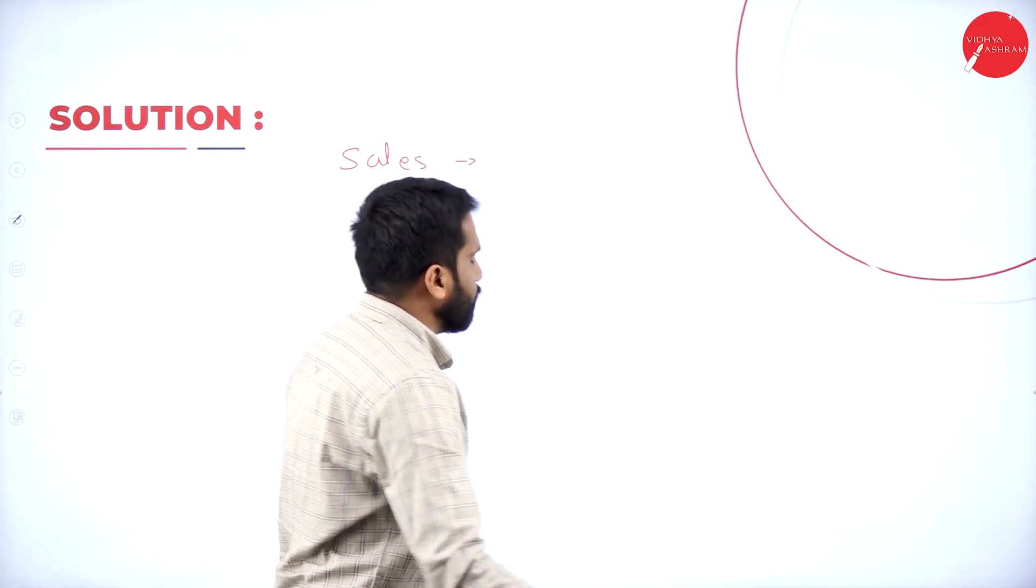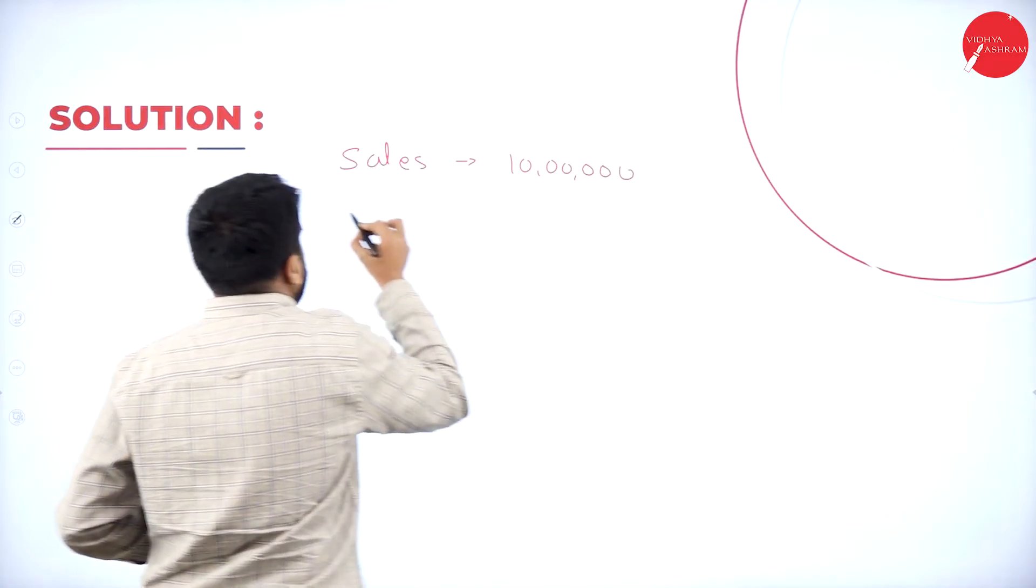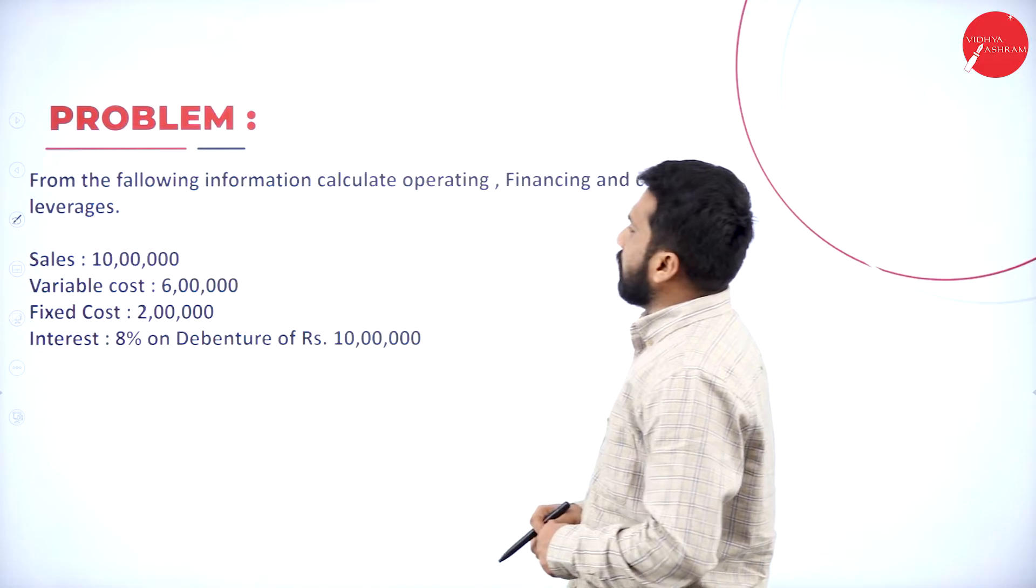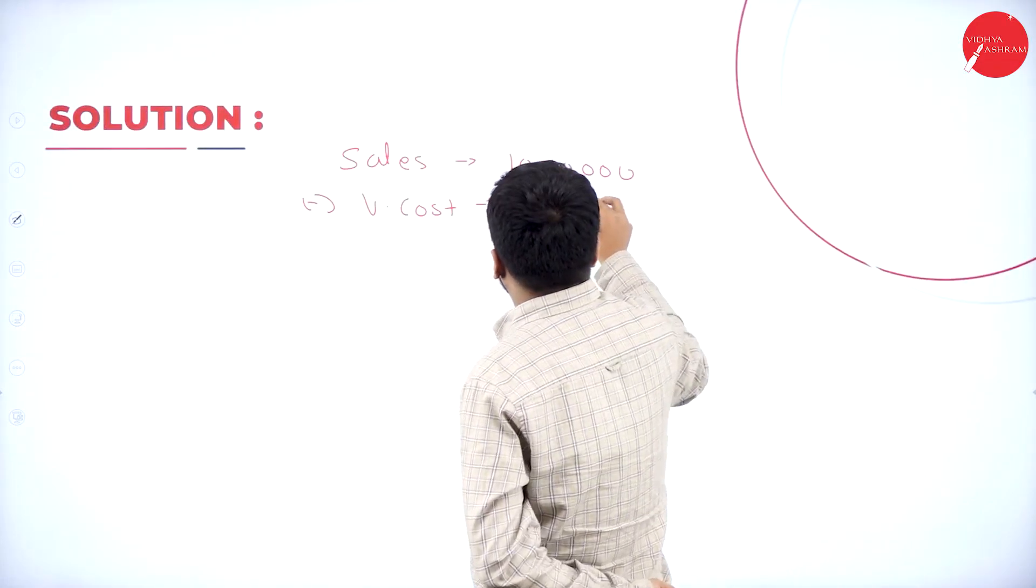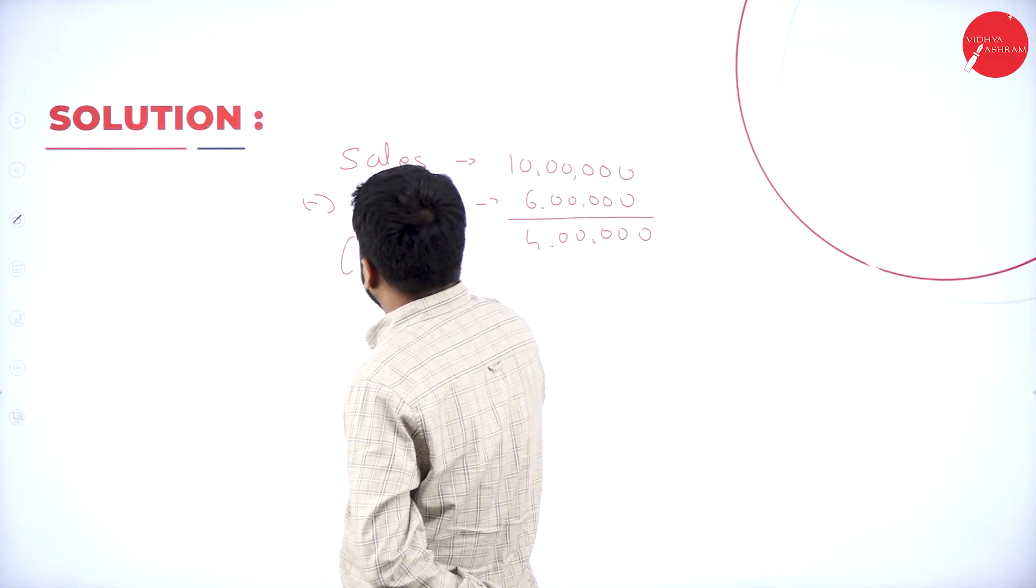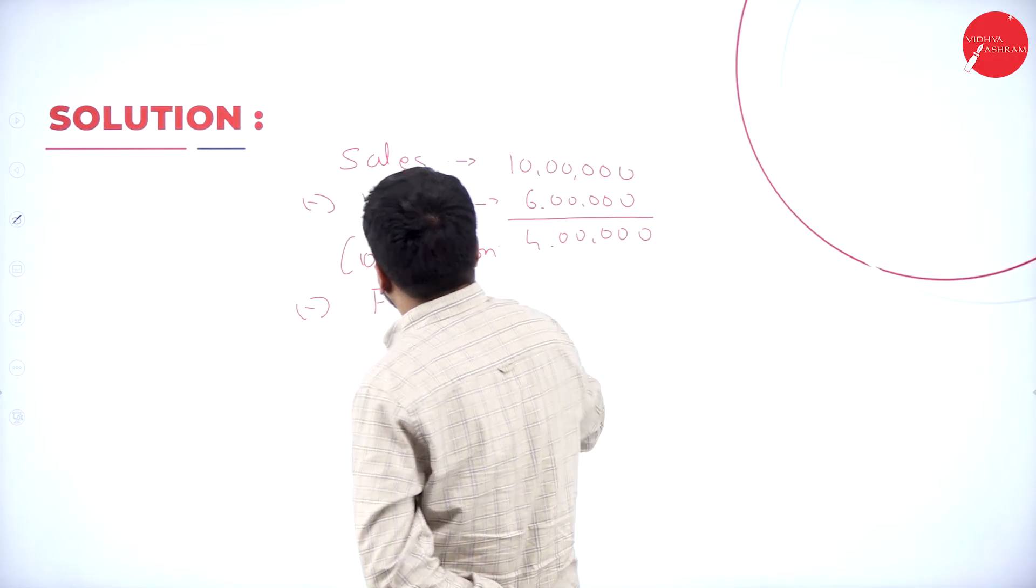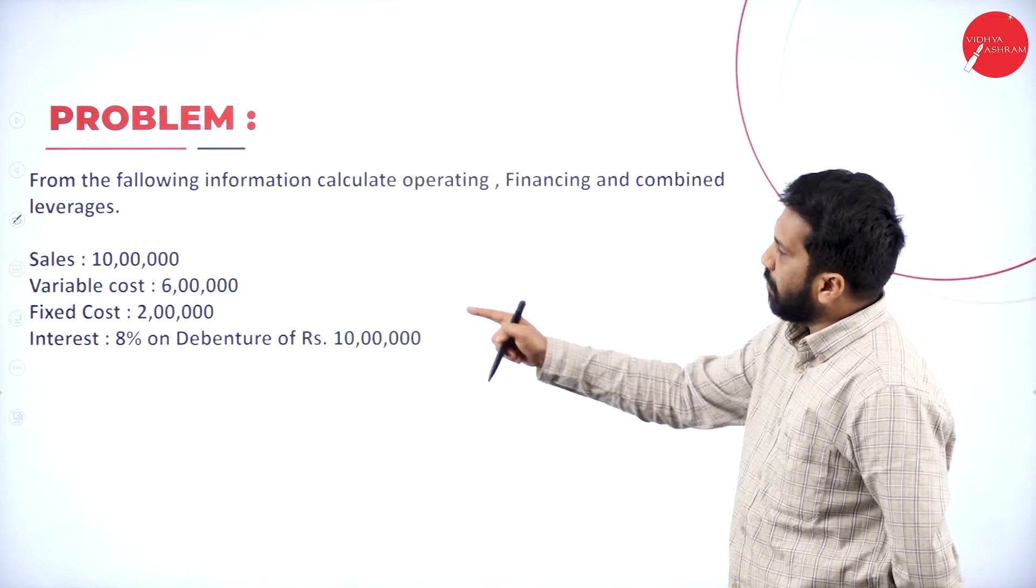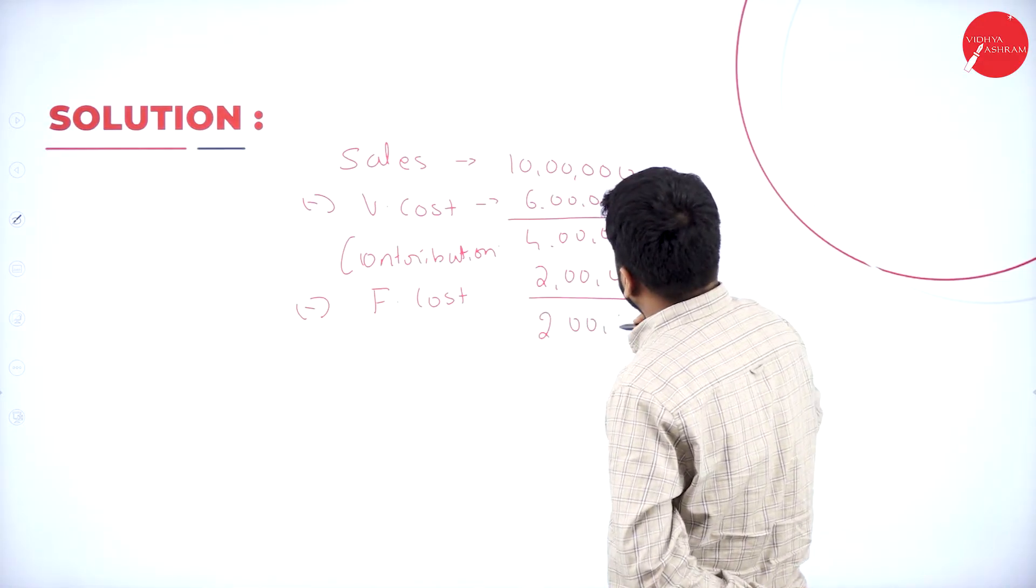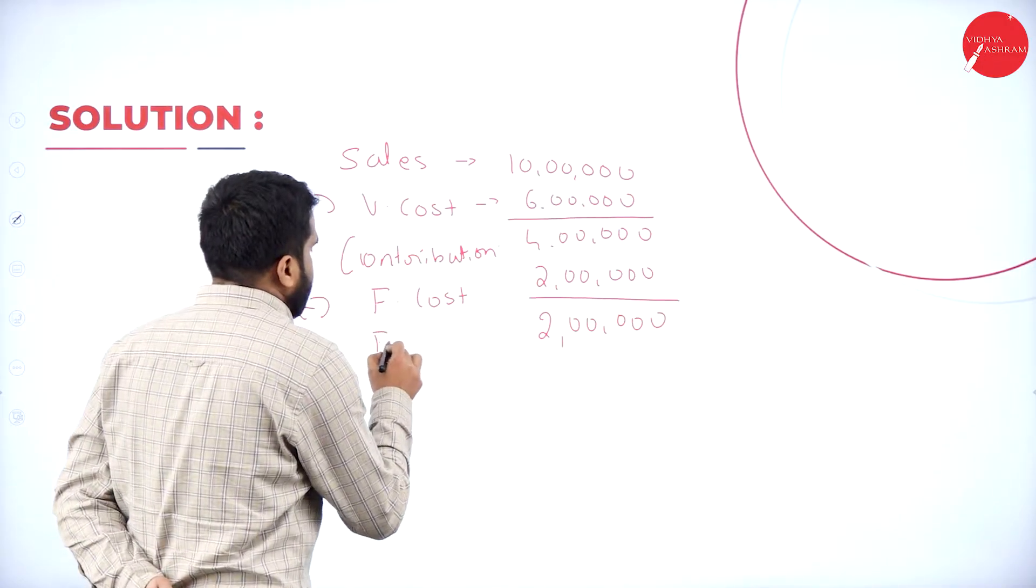Sales is, your selling price is 10 lakh minus variable cost. Sales minus variable cost. So, what is your variable cost? The variable cost is 6 lakh. Sales minus variable cost. We call it as contribution minus fixed cost. So, what is your fixed cost? In this fixed cost, we have 2 lakh. So, we take 2 lakh as your fixed cost. 4 lakh minus 2 lakh is how much? 2 lakh. So, your fixed cost we deducted and we got 2 lakh. What is this? This we call it as EBIT.